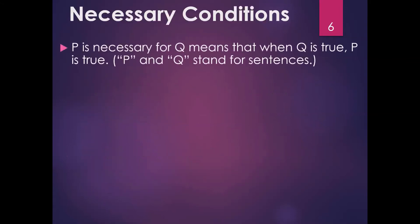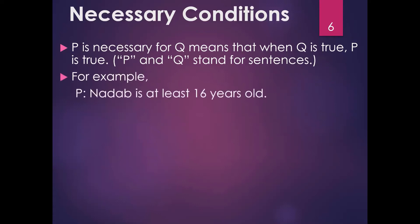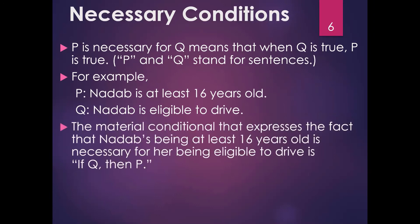Necessary conditions go the other direction. P is necessary for Q means that when Q is true, then P must be true. For example, let P be 'NADAB is at least 16 years old' and Q be 'NADAB is eligible to drive.' The material conditional expressing this is: if Q, then P. If NADAB is eligible to drive, then NADAB is at least 16 years old.